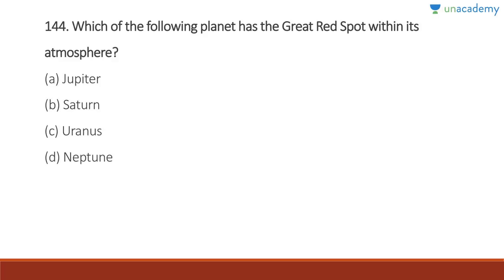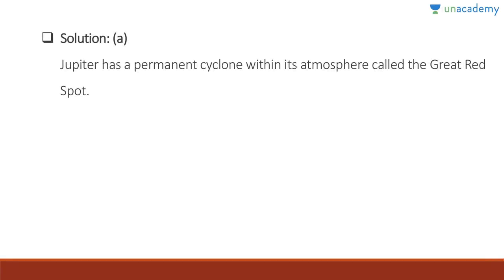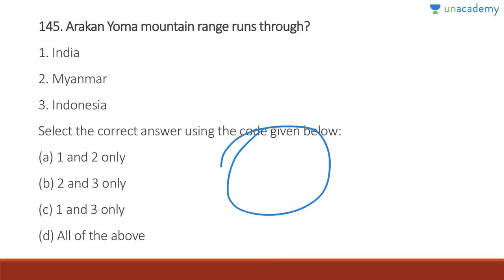Question 144: Which planet has the Great Red Spot within its atmosphere? Jupiter. If you see Jupiter's image, you will find the Great Red Spot — it is a permanent cyclone always present in its atmosphere.